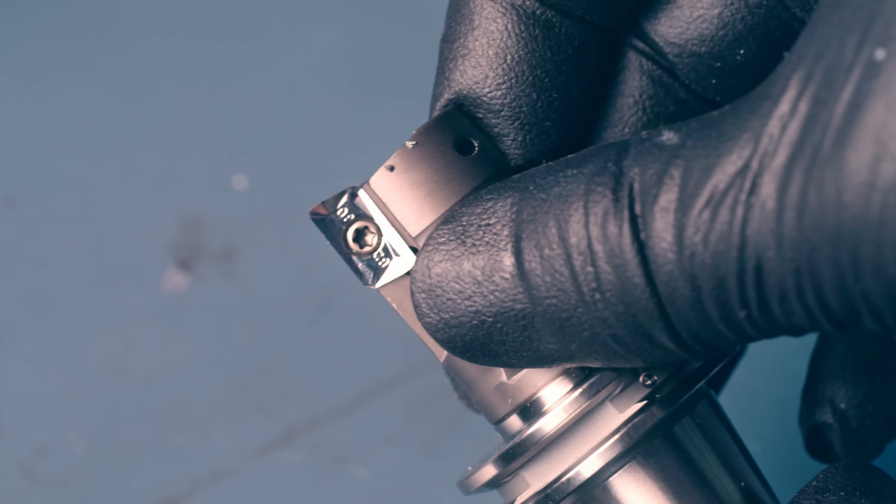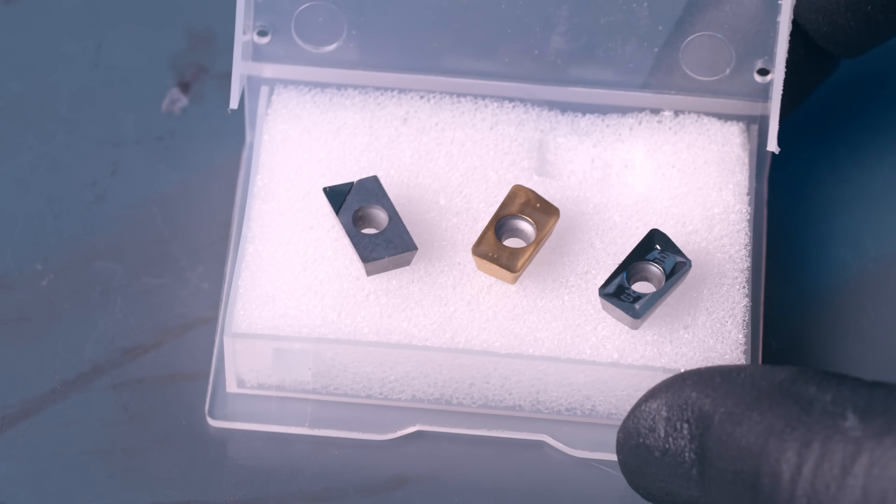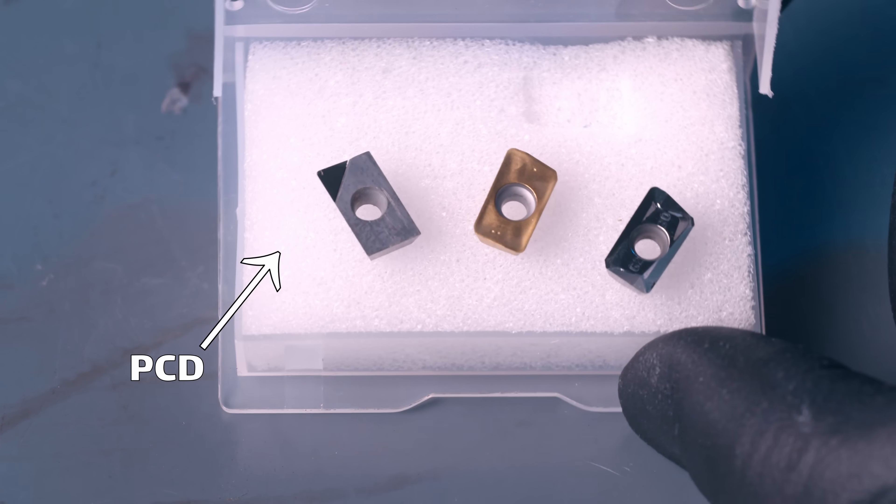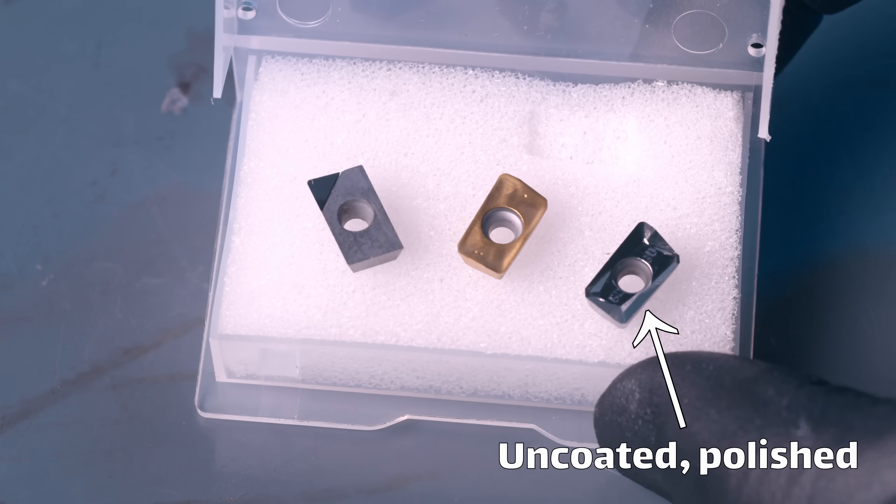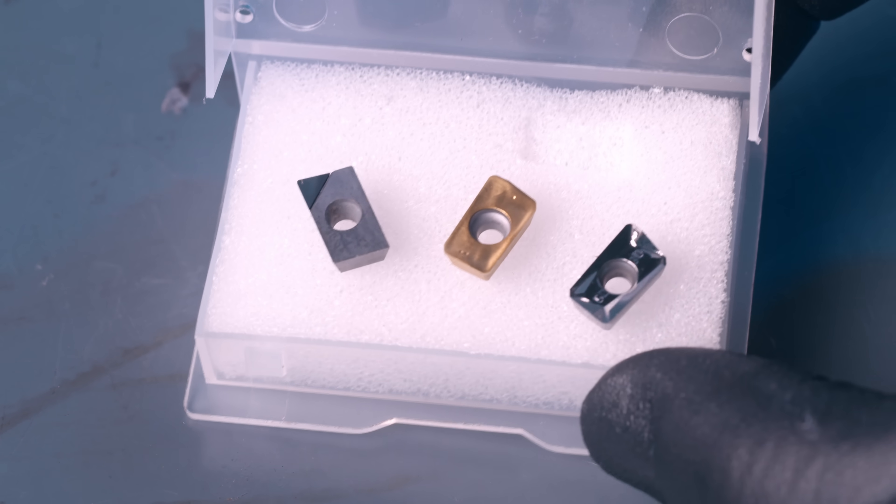Sometimes the carbide is pressed into little shapes called inserts. That's what we're going to use today. These are three different cutting inserts and you can see they all have slightly different shapes and coatings and materials. These little differences can have a big impact on how they actually cut the metal.